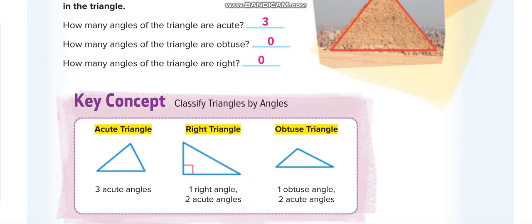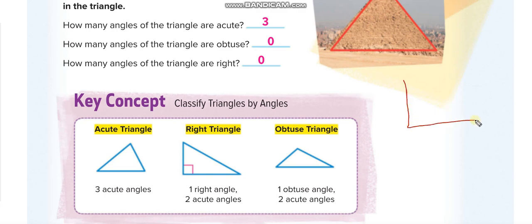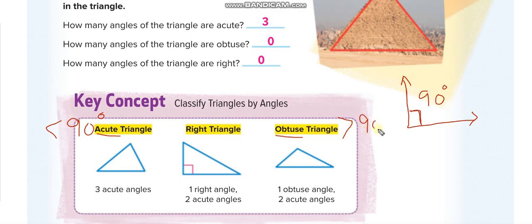Now we will classify triangles by their angles. First, you need to know: if an angle is straight, forming a square corner, it is 90 degrees — that is a right angle. An acute angle is less than 90 degrees, and an obtuse angle is more than 90 degrees.